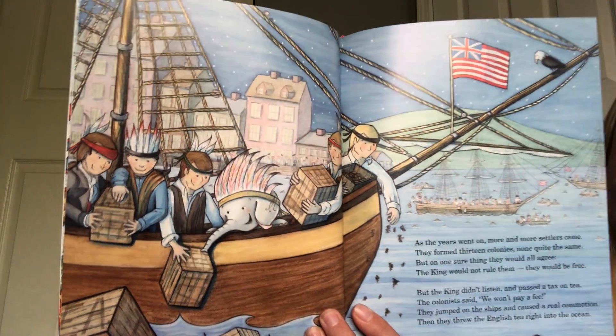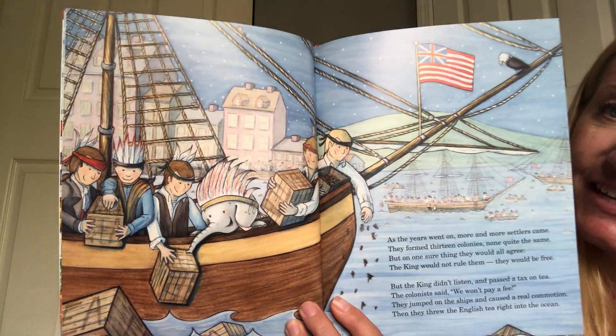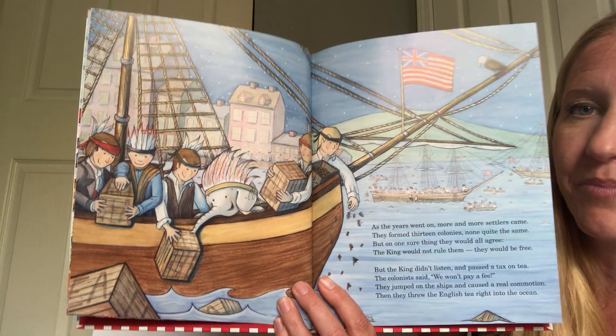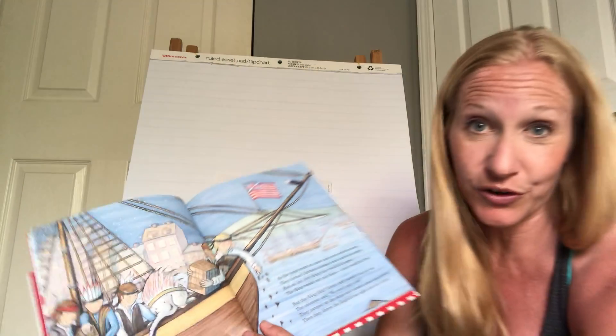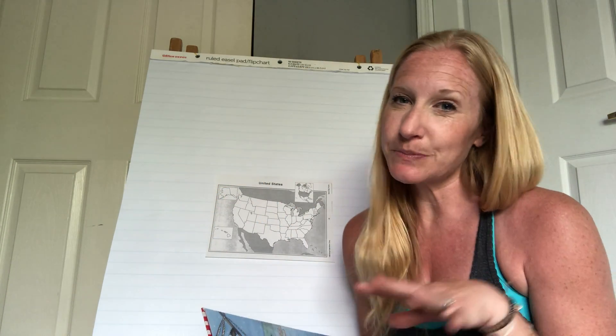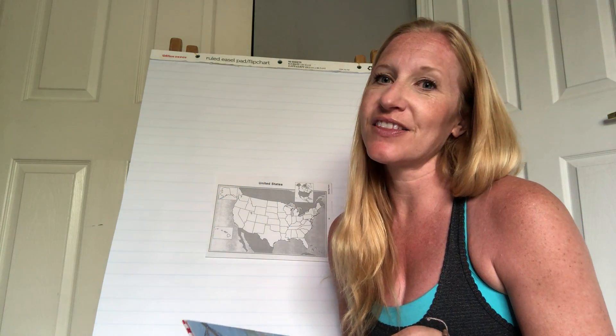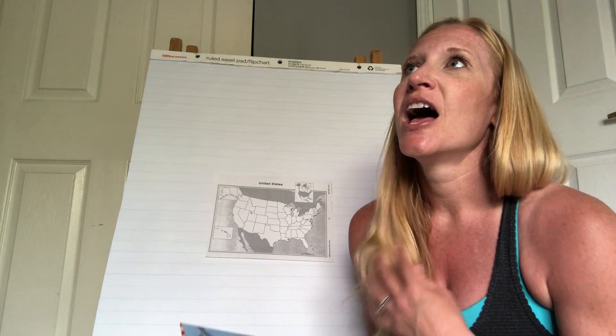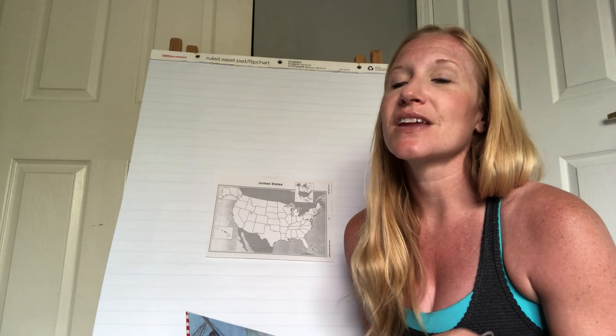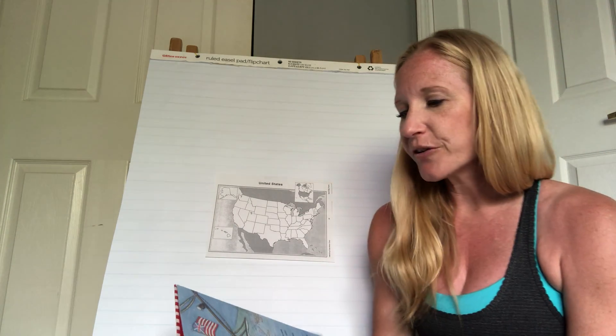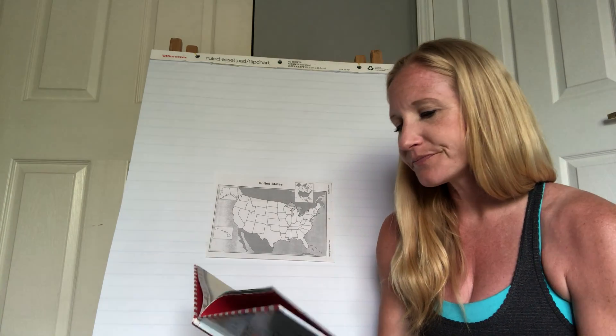This was something called the Boston Tea Party — you'll learn more about that in fifth grade. Everything in this book is obviously fictional because it's an elephant who's reading the stories. Some of these things are very factual, and other things, as you get older, you'll learn a little bit more about.